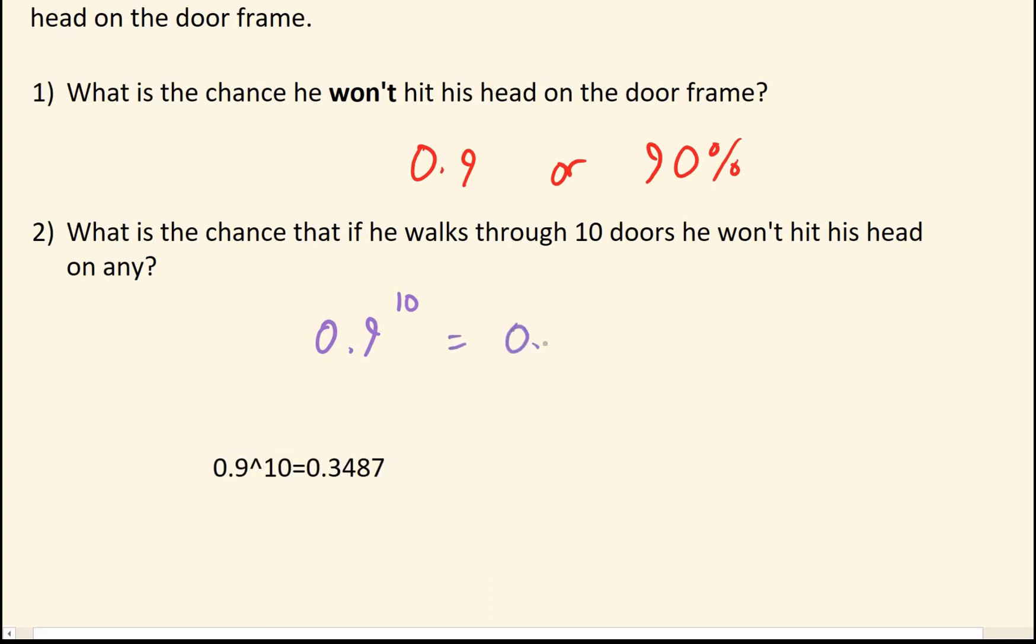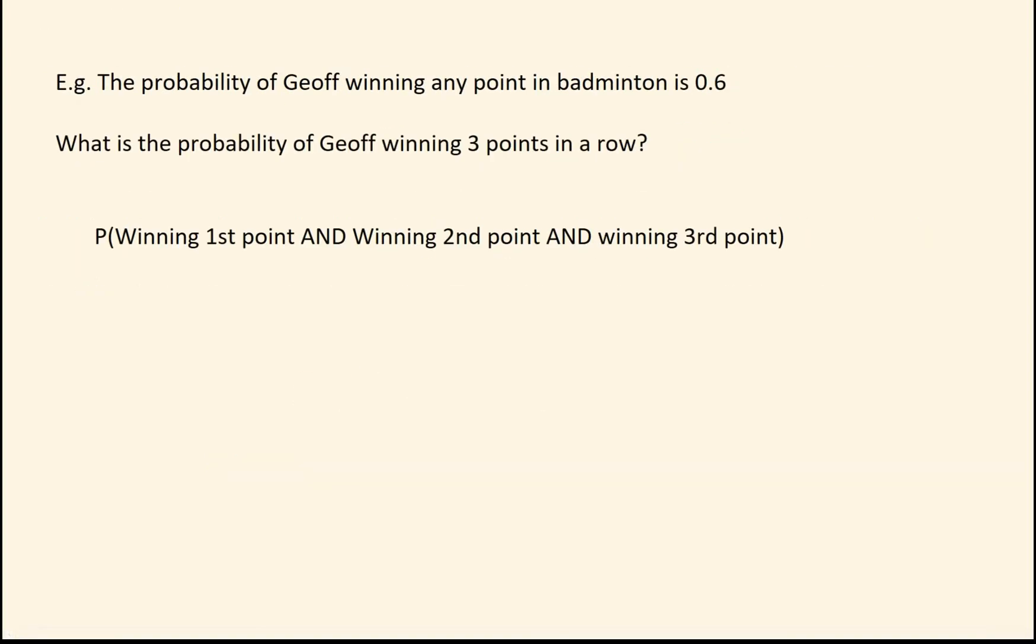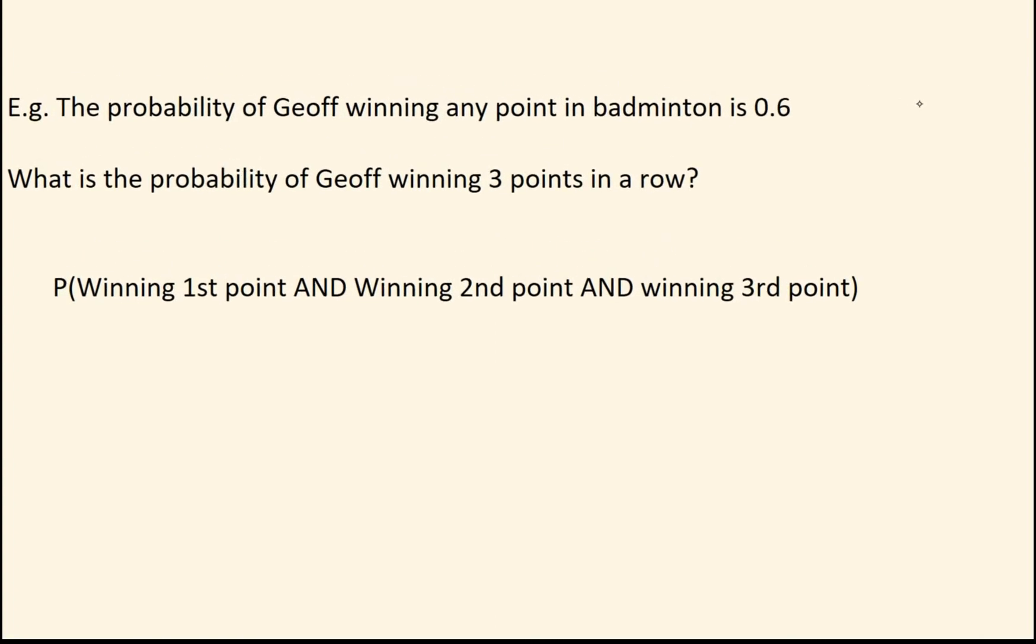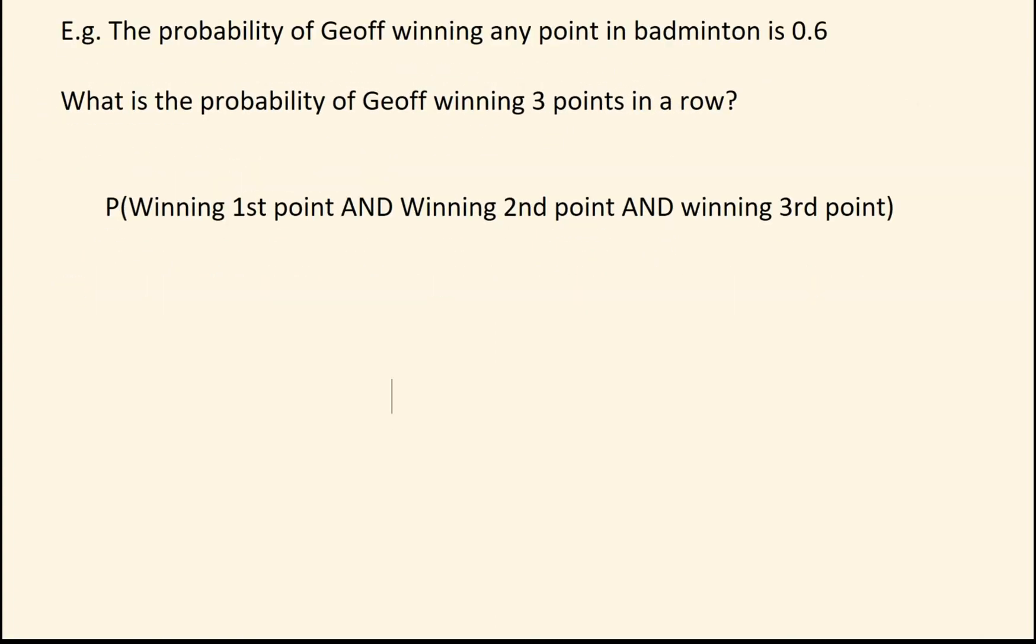Which comes out at 0.3487 or 34.87%. Let's do a bit more. So the probability of Geoff winning any point in badminton is 0.6. What's the odds of him winning three points in a row? So we do the exact same thing. 0.6 to the power of 3. You need to win three times. Working that out, that is going to be 0.216.